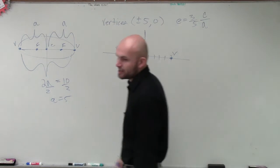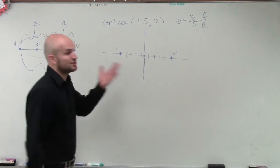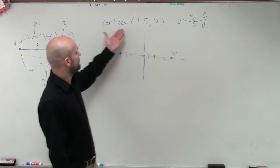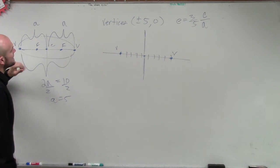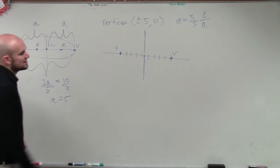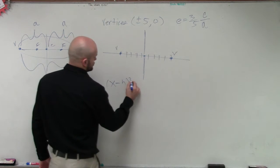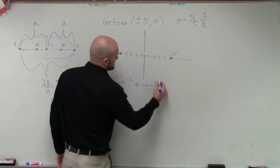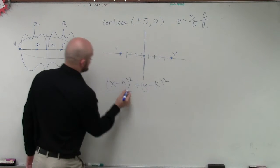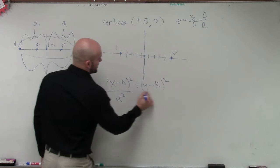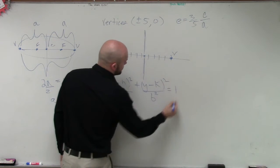But, ladies and gentlemen, for our equation - let's go through this. We're trying to write the equation, right? So for our equation, we know this is horizontal. So the equation is going to look like this: x minus h squared plus y minus k squared. Since it's horizontal, a squared is going to be below here. b squared equals 1.